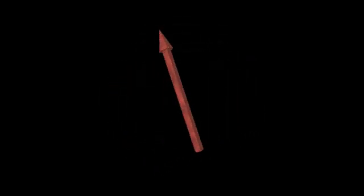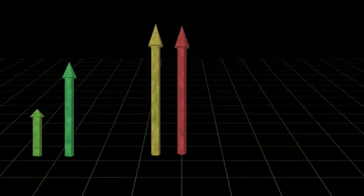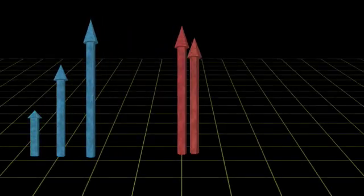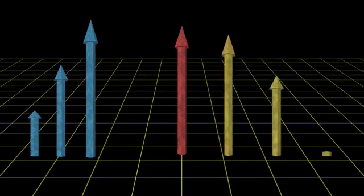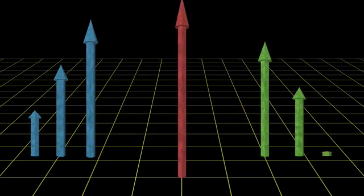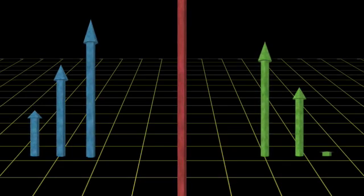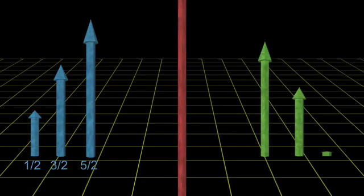The fact is that the property called spin is quantized as well. No big surprise. And all the particles fall into one of two different families because of this. Those particles that have spin equal to one half, or three halves, or five halves, and so on, form the family called fermions.